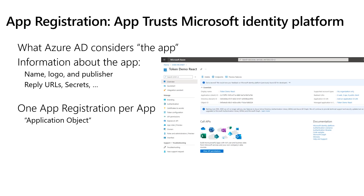The first step you need to do as a developer to build on the Microsoft Identity Platform and add authentication is you need to tell us that you're going to be trusting the Microsoft Identity Platform. The way you do that is by creating an application registration. I like to think of this as what does the developer know about the application?